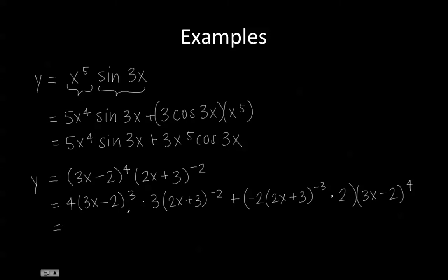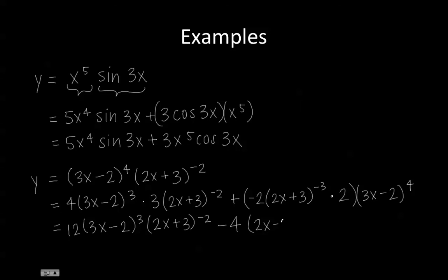So let's try to clean this up a little bit. 4 times 3 is 12, and then we have 3x minus 2 to the power of 3, and then 2x plus 3 to the power of negative 2. And we have negative 2 times 2, which is negative 4, minus 4 times 2x plus 3 to the negative third power times 3x minus 2 to the fourth power.